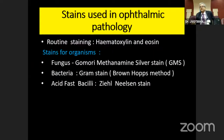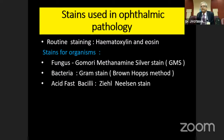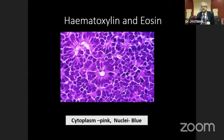Stains used in ophthalmic pathology: routine staining uses hematoxylin and eosin, which is commonly used. For organisms — fungus: Grocott's methenamine silver stain (GMS); bacteria: Gram stain, Brown-Hopps method; acid-fast bacilli: Ziehl-Neelsen stain.